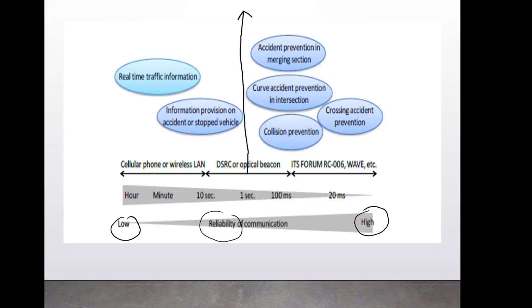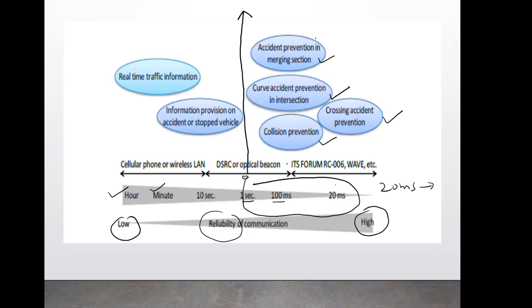Starting from point zero on the left-hand side, the scale goes from one second, 100 milliseconds, 20 milliseconds, then 10 seconds, one minute, and one hour. All information related to response time, reliability, and communication requirements — especially those related to safety and driving processes — are highly important. For example, collision prevention, crossing accident prevention, curve accidents, and accident prevention in merging sections all require information within one second or less, roughly between 20 milliseconds and one second.